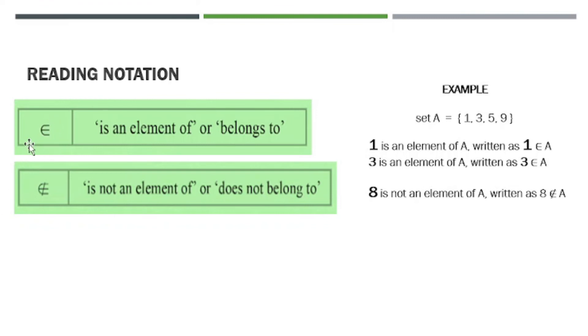Next we have the reading notations. In mathematics, we have this symbol which means is an element of or belongs to. When you use this symbol, it has that element. But when we use this symbol, it means it does not have that element, so it's called is not an element of or does not belong to. We have an example here. Look at this example: A has contents 1, 3, 5, 9. So 1 is an element of A. This is how it will look: 1 is an element of A. When we write this in mathematics or mathematical form, this is how it looks: 1 is an element of A.